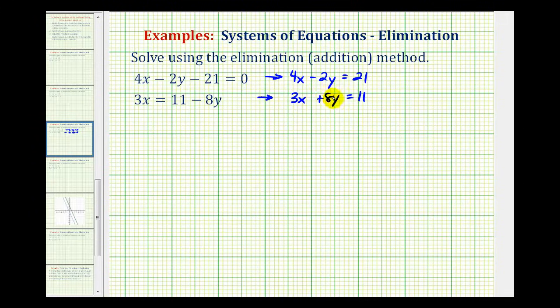But if we look at the y terms, here we have minus 2y and here we have plus 8y. If we multiplied this first equation by 4, this would be minus 8y, this would be plus 8y, and then the y terms would be opposites.